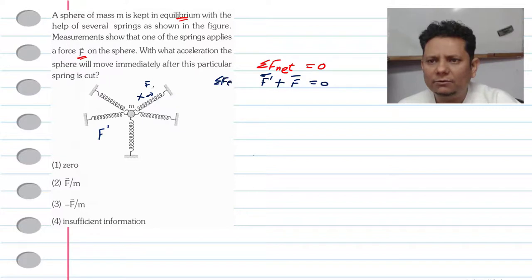F net should equal F dash plus F equal to zero. Now when connected to a force, we have to see that F net becomes the determining factor.